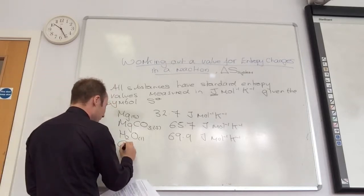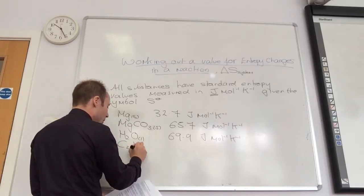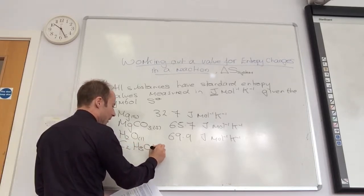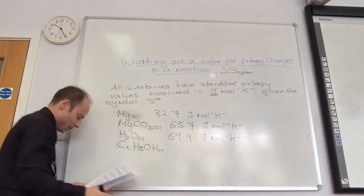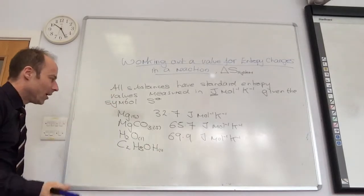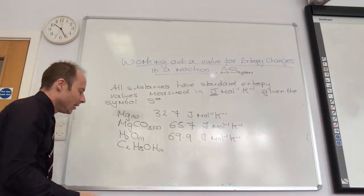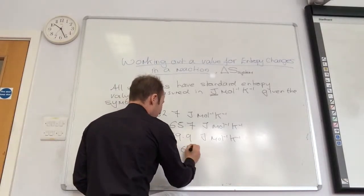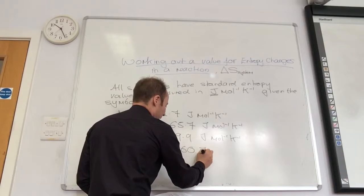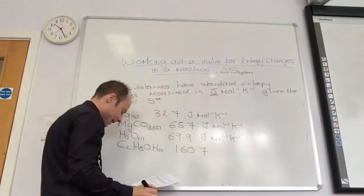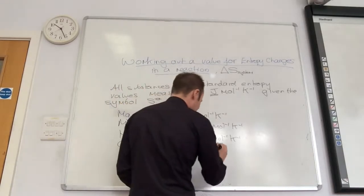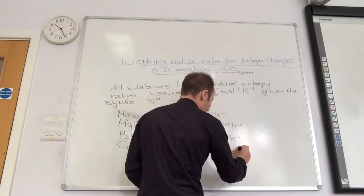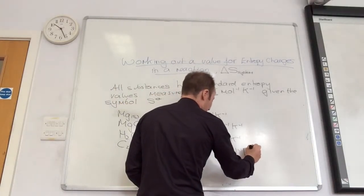Let's do ethanol as a liquid. What do we reckon? Higher — and we're well up by now: 160.7 joules per mole per kelvin.